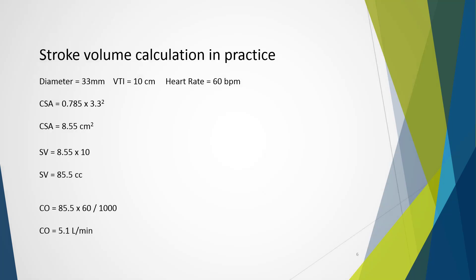Putting the stroke volume calculation into practice: Here we're assessing the proximal ascending aorta. We know their diameter is 33 millimeters. When we do our Doppler spectral trace we've got a VTI of 10 centimeters, and we know the patient's heart rate is 60 beats per minute. Working with our formula, cross-sectional area is 0.785 times 3.3 squared. So we've got to be careful here—we've converted 33 millimeters into centimeters. This gives us a cross-sectional area of 8.55 centimeters squared.